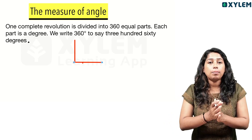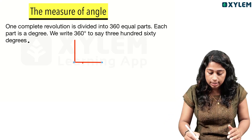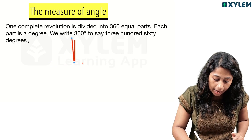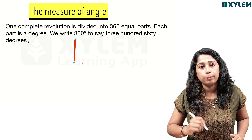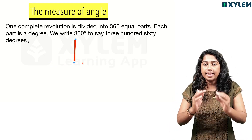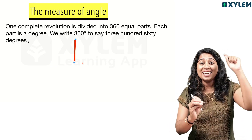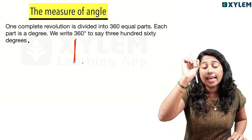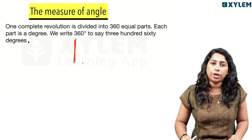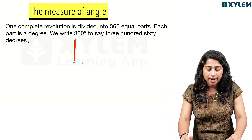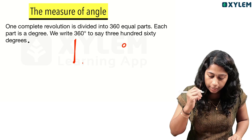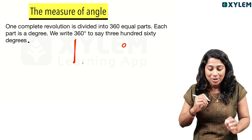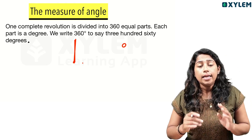So this is how we make revolutions and measure angles. A complete revolution is 360 degrees. The unit for angle measurement is the degree, which we write as a small symbol in the middle — the degree symbol.